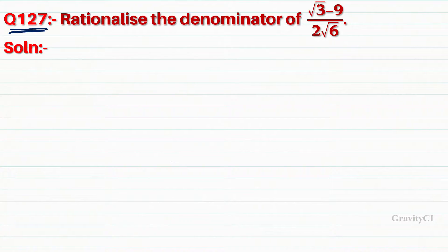Question number 127: Rationalize the denominator of √3 minus 9 upon 2√6.